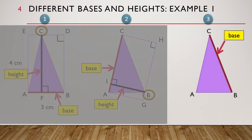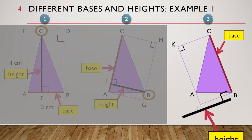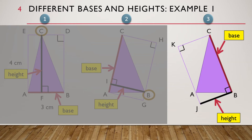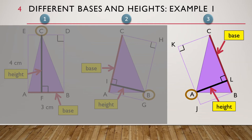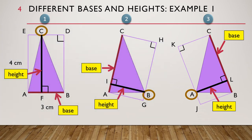Let's look at the third case. Here, BC is the base. We can draw the related rectangle from the base. The base BC is the common side shared by the triangle and the related rectangle. In this case, the height is JB — it is perpendicular to the base. We can move the height so that it starts from A, which is the vertex away from the base BC, and goes all the way down to the base. So, AL is also the height of triangle ABC. We can see that when the base changes, the height changes as well, but we will get the same answer for the area of the triangle in each case, because it is the same triangle ABC.